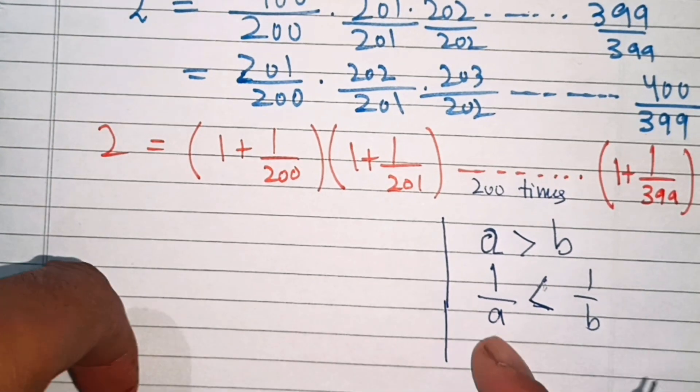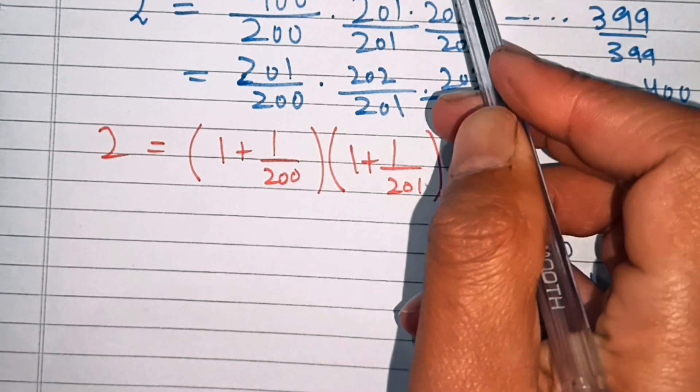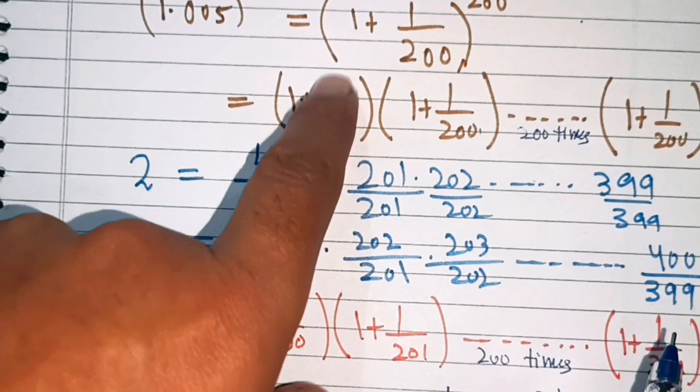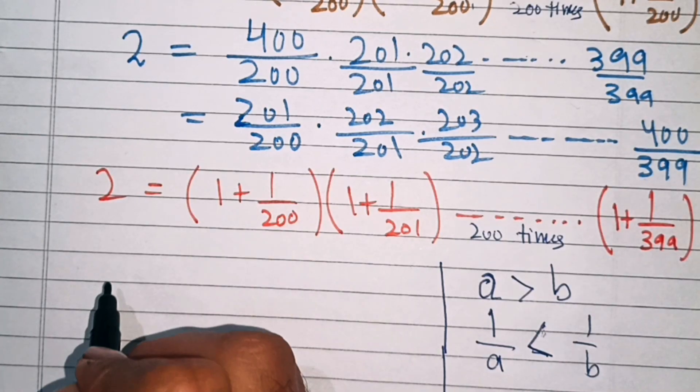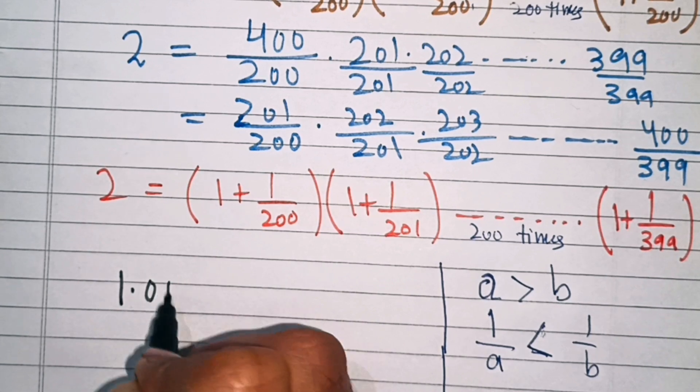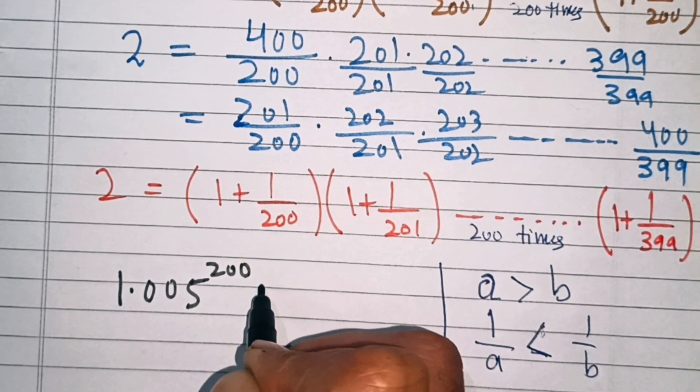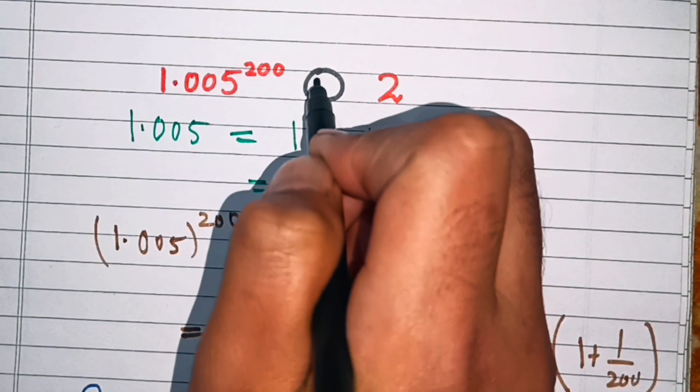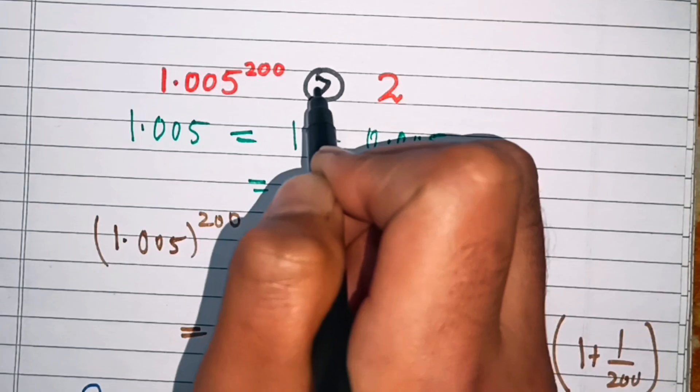Now apply this rule in the given problem. Here we have denominator greater than this one, so that means this number will be greater than this number. That is, 1.005 power 200 will be greater than 2. So we write this sign: 1.005 power 200 is greater than 2.